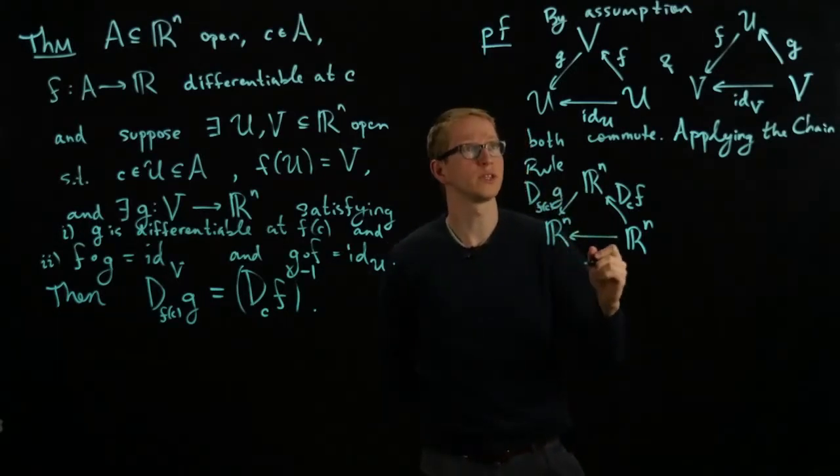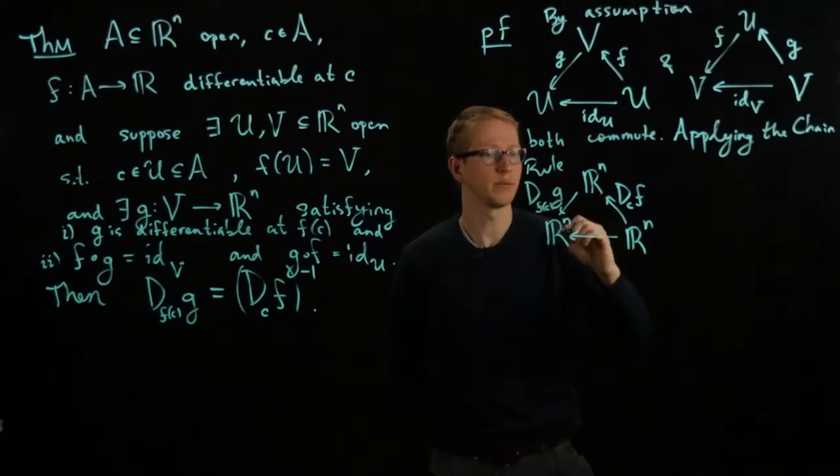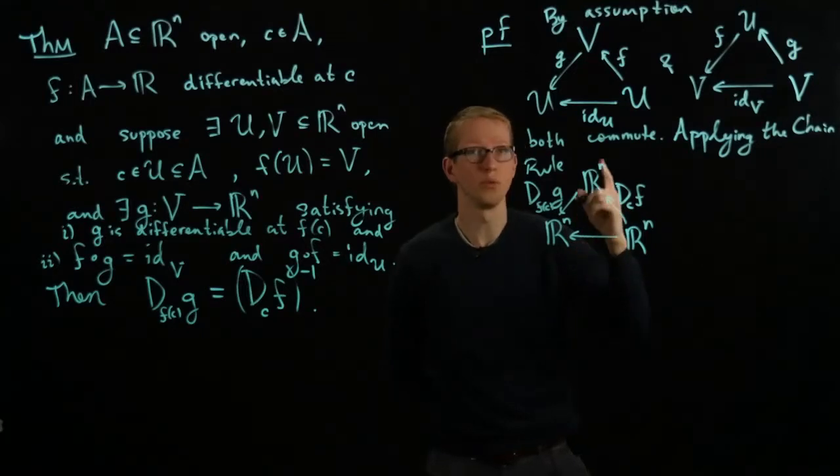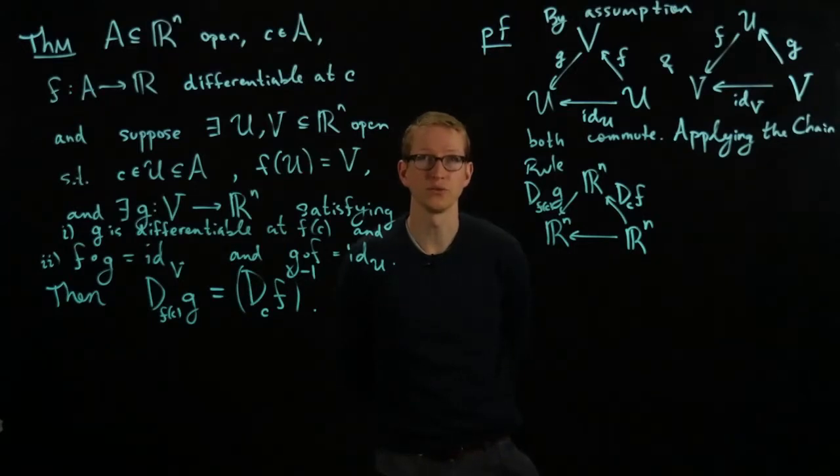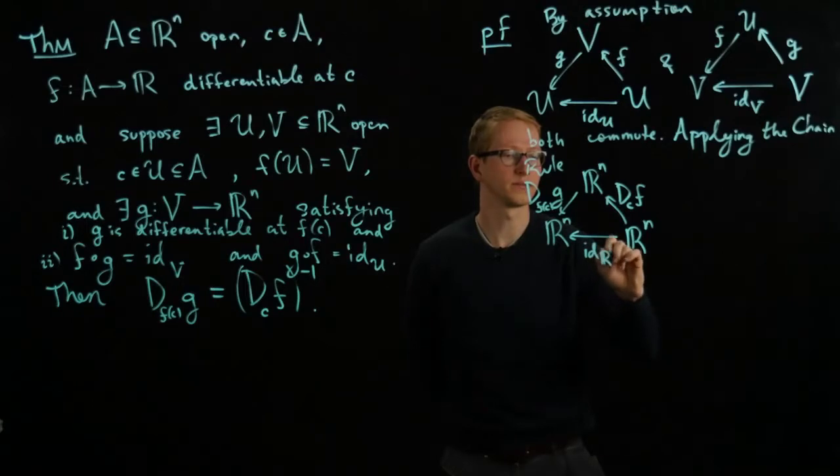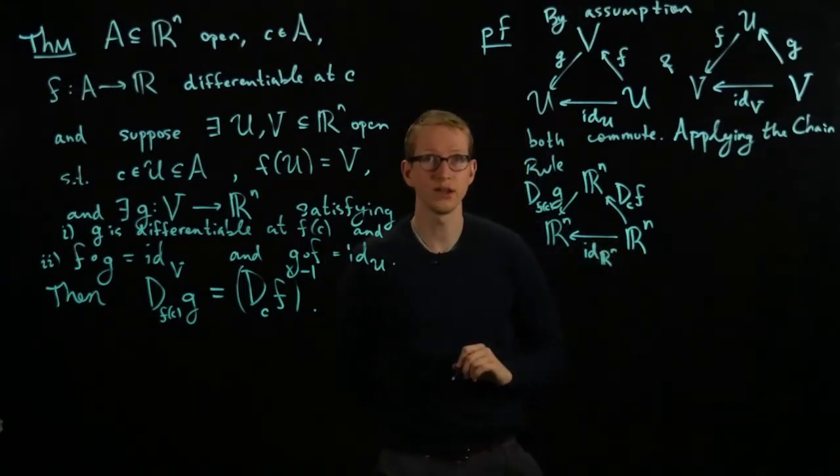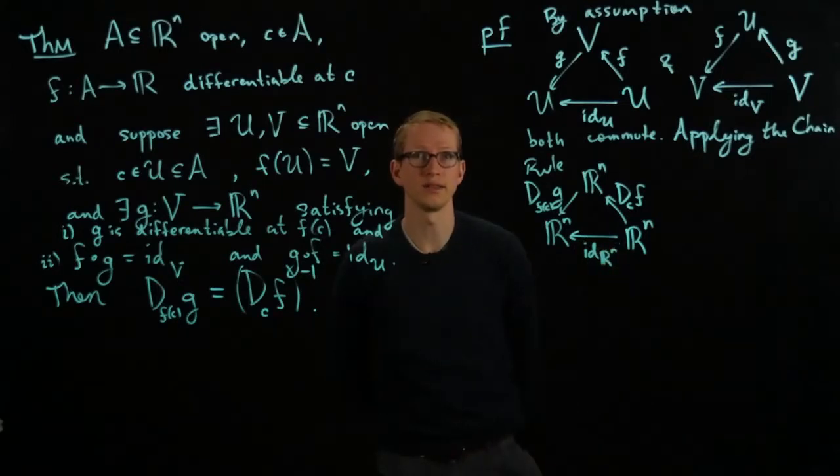And the chain rule says that diagrams like this always commute and that means that this composition is equal to what's the differential of the identity function? The identity function is an example of a linear function restricted to a domain and because the differential of a linear transformation is the linear transformation itself, this is also just the identity. So I didn't write all of that down but you should be able to know that that's the reason why I'm writing the identity here.